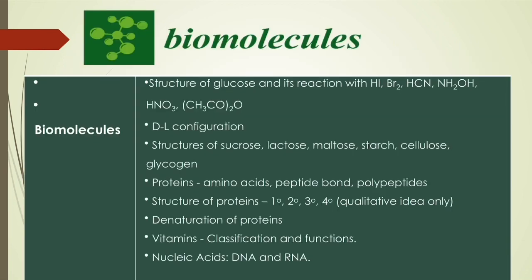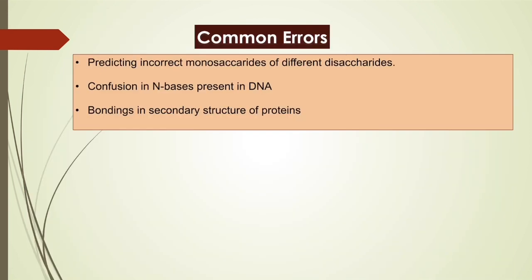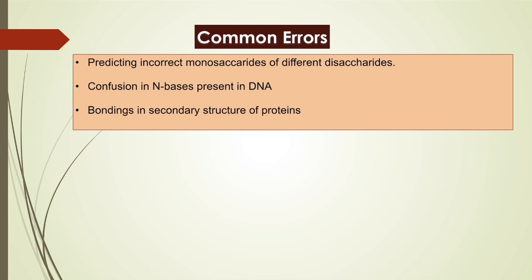Coming to the last chapter, Biomolecules. The important areas are carbohydrates, proteins, vitamins, and nucleic acids. Common errors: students get confused in writing the correct monosaccharides of different disaccharides, have confusion in identifying the nitrogenous bases present in DNA, and in identifying the nature of bonds present in the secondary structure of proteins. These can be rectified with proper study.